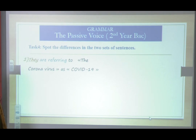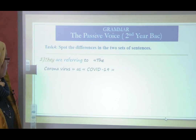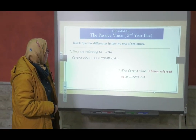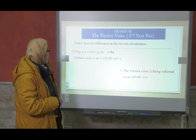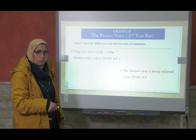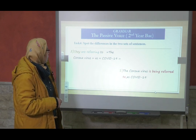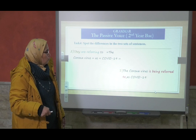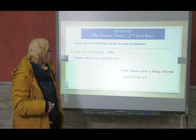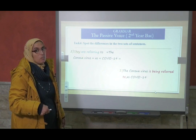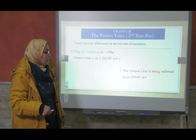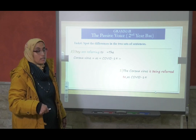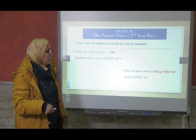They are referring to the coronavirus as COVID-19. The coronavirus is being referred to as COVID-19. Here we have 'they' — what is 'they' here? Is it important to keep it? 'Are referring' is changed to 'is being referred to.' What did we add? We have 'are' changed to 'is' — same tense, simple present — but we add 'being.' So to be is in the present continuous form — 'is being' — and we add 'being' here.